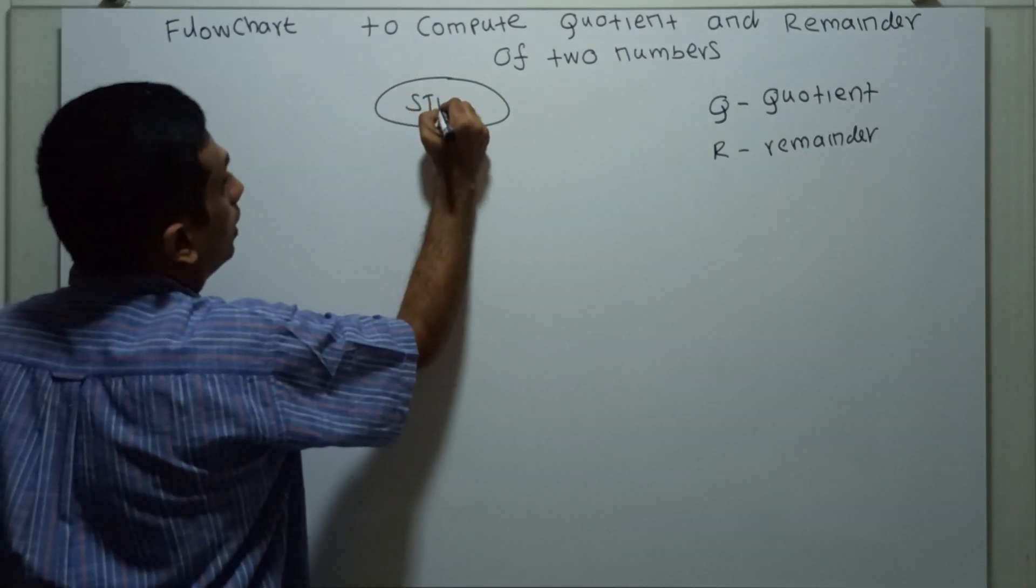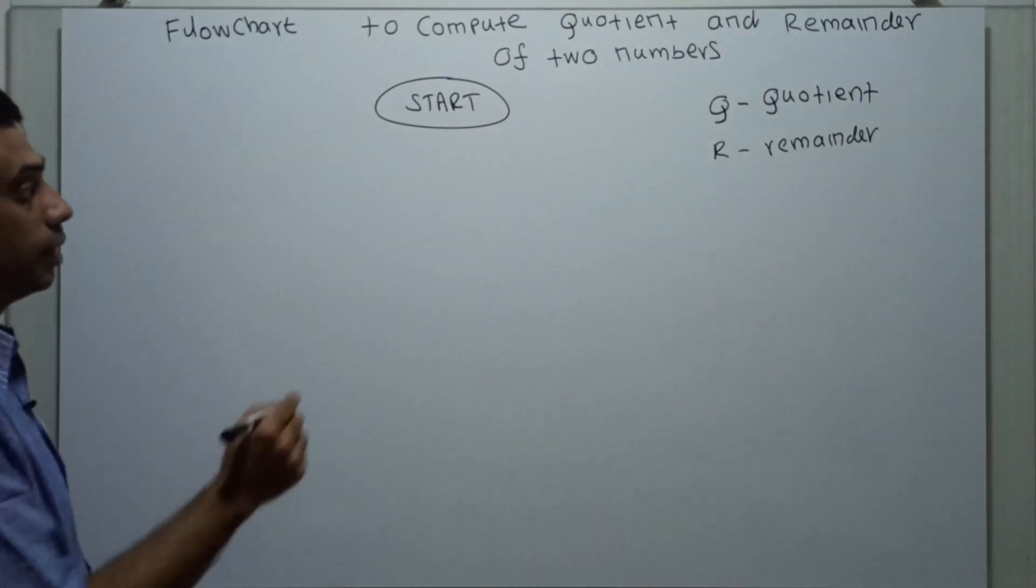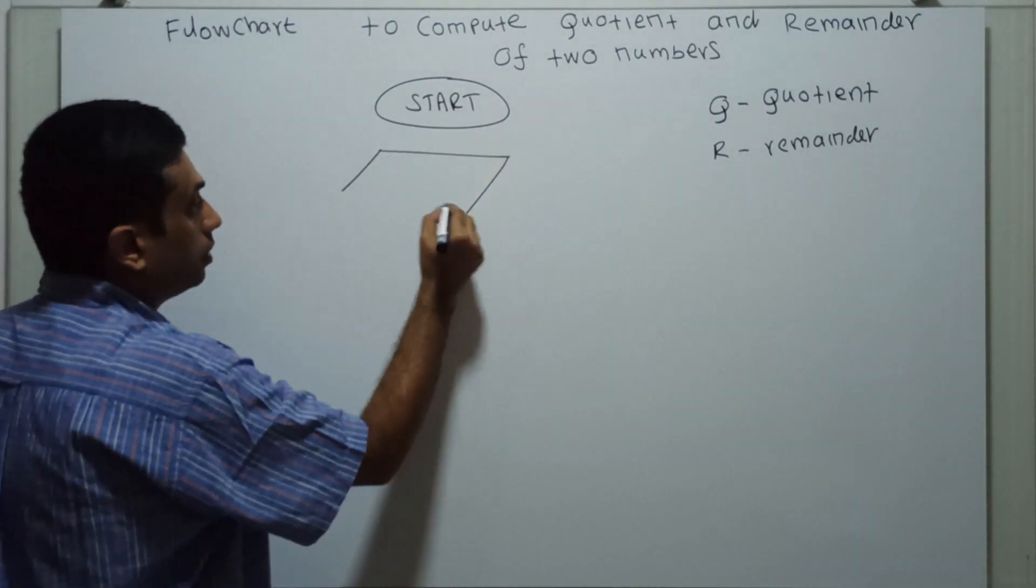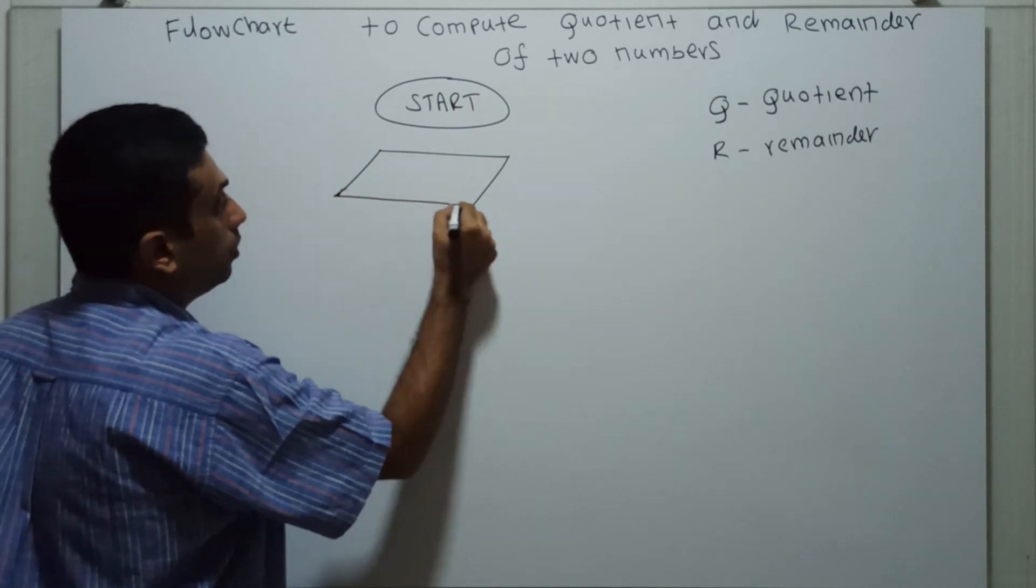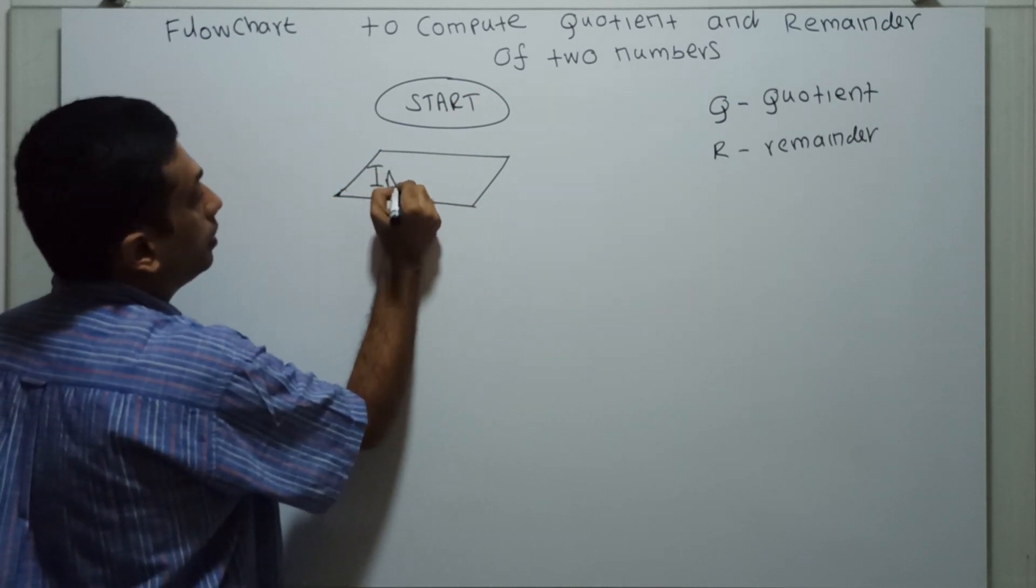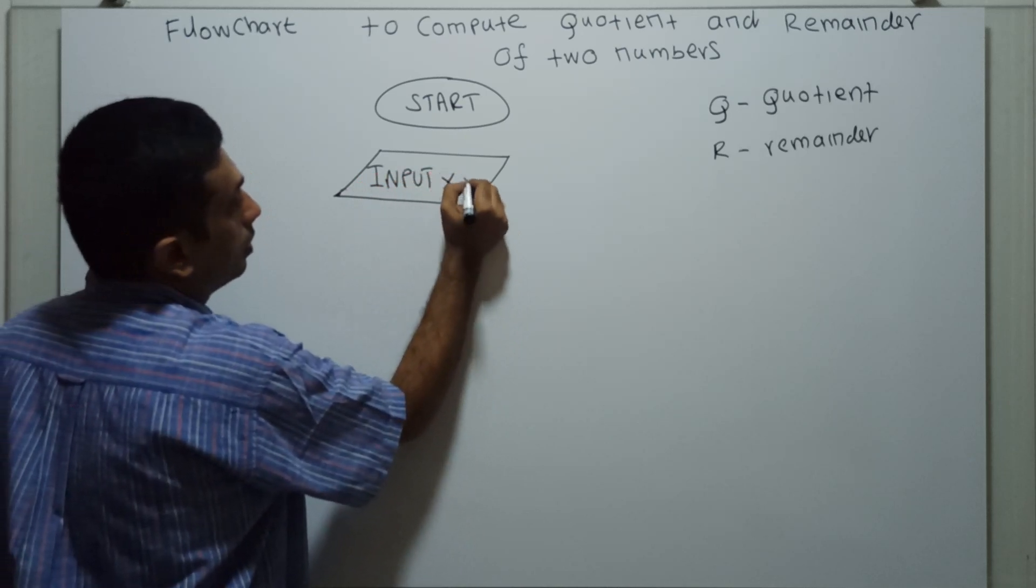So this is the logical start of the flowchart. I am entering the input of two numbers, x and y.